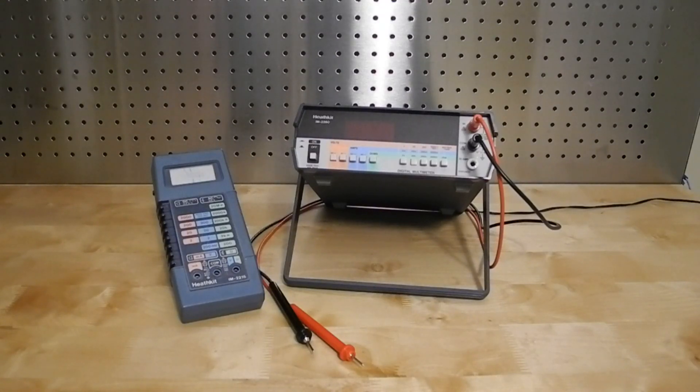It features a 3.5-digit red LED display. It can measure AC and DC voltage and current, as well as resistance, and can run on batteries or AC power using an optional power adapter. It was offered as a kit and sold from 1982 to 1991.